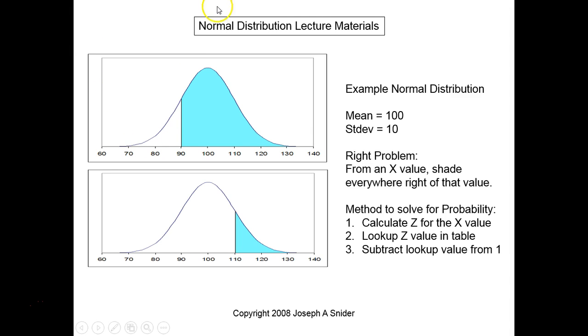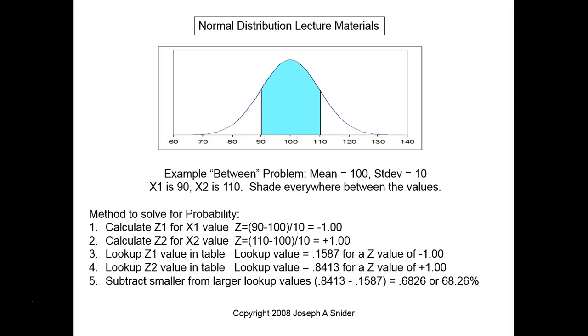So that's why that step three is in there. Subtract the lookup value, which is everything to the left, that's this white area, and then you're going to get 100 percent minus that part, which is going to be your blue shaded area to the right. So three steps in solving for a right hand problem.